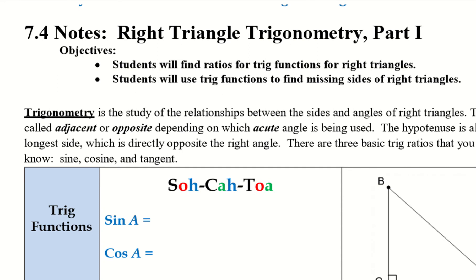Hello, everybody. Today we're doing 7.4 notes, which is right triangle trigonometry, and this is our part one for learning right triangle trig. Our objectives are: students will find ratios for trig functions for right triangles, and students will use trig functions to find missing sides of right triangles.